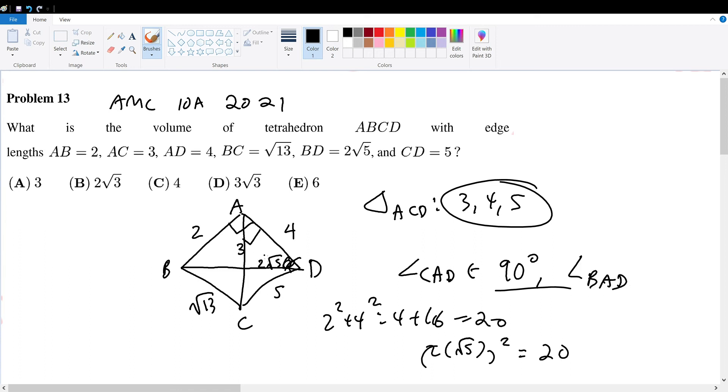We can also see that 2, 3, √13 is another Pythagorean triple. 2² + 3² = 4 + 9 = 13 = (√13)². So this forms another right angle.